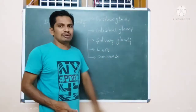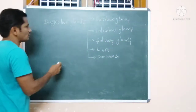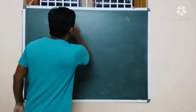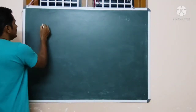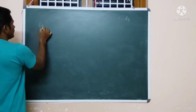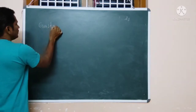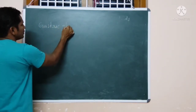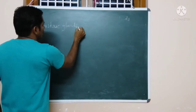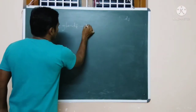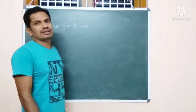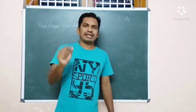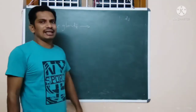Now I am going to talk about gastric glands. The first one is the gastric glands, which are located in the wall of the stomach. Beneath the wall of the stomach we can find the gastric glands.